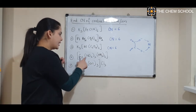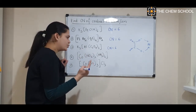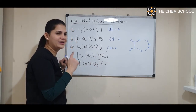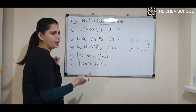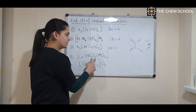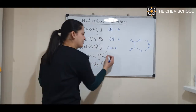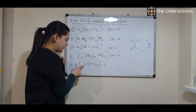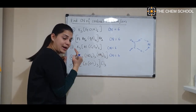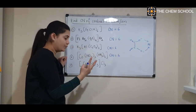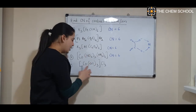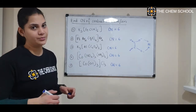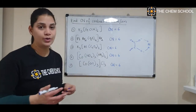NO₂ has a charge of minus 1, so it is a monodentate ligand. Ammonia is also a monodentate ligand. For monodentate ligands, the total number of ligands equals the coordination number directly. So three NO₂ plus three NH₃ gives a coordination number of six. EN is a bidentate ligand — it forms two coordinate bonds — so 2 × 3 = 6. Again, the coordination number is six.